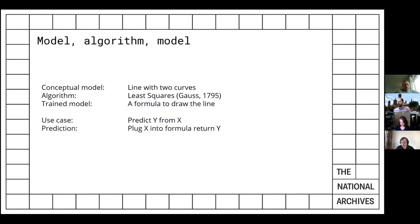Going back to the terminology: the conceptual model in linear regression would be, for example, a line with two curves. The algorithm is called least squares, which is hundreds of years old. The trained model is the formula that draws that line between the dots on screen. The use case: I want to predict something from data — data goes in. Notice it doesn't matter what the axes mean — if you have numerical data that fits the pattern, it will work. The algorithms don't care what your data really means. You stick your input data into the formula and get an answer out.